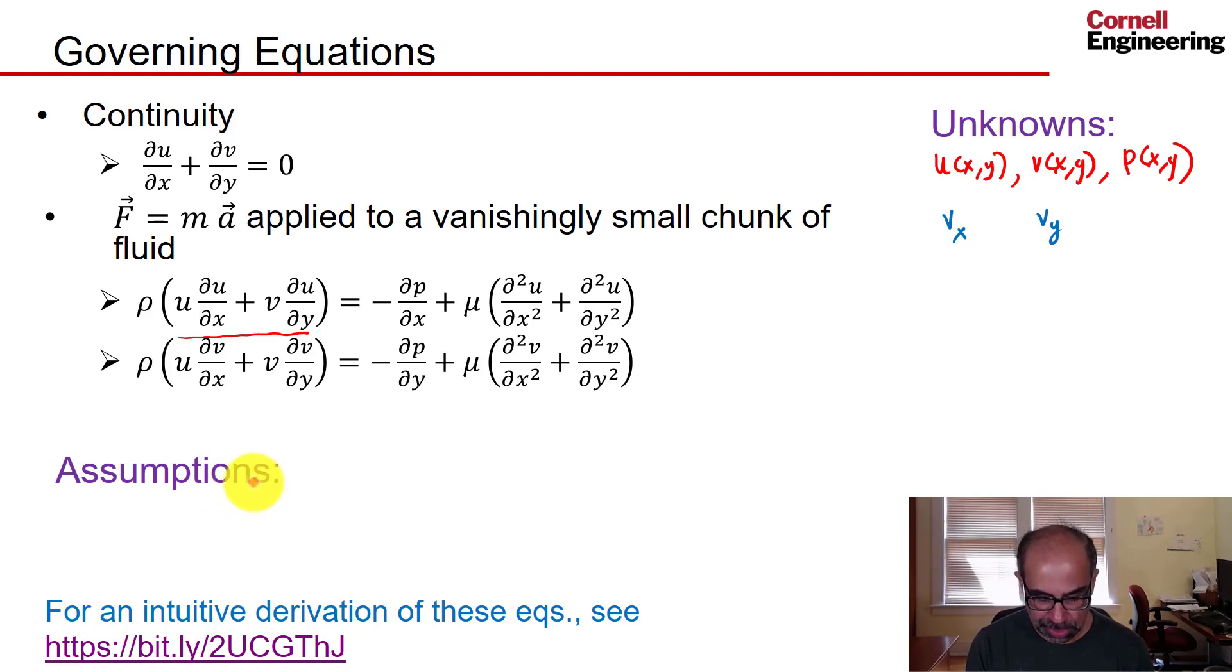Let's think about the assumptions embedded in those equations. Obviously, the flow we are assuming is 2D. We are assuming it's steady; we don't have any unsteady terms in the governing equations. We're assuming rho is constant, so the flow is incompressible. We are assuming the flow is laminar.